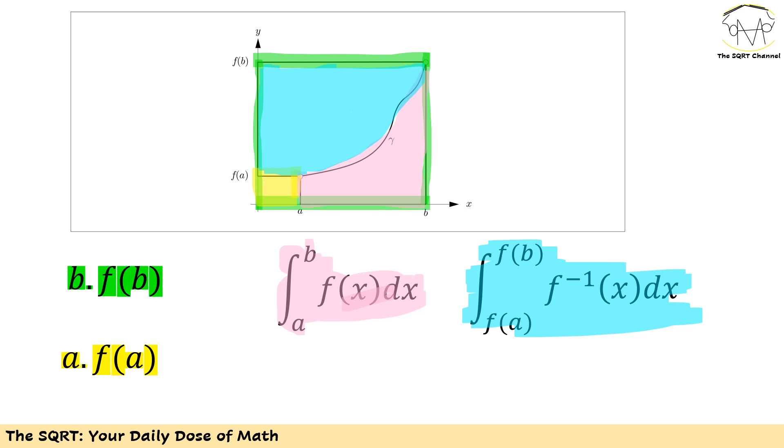So for that I'm going to talk about what we have if we say b times f of b. First of all you can see that b is what we have for the x axis and then f of b is going to be what we have for the y axis. Now if I calculate b times f of b, it's going to be the area of the rectangle that I have here in green.